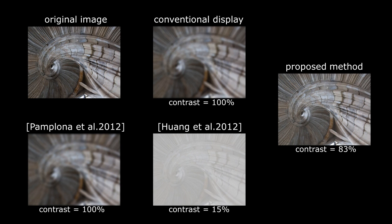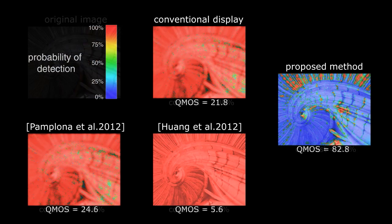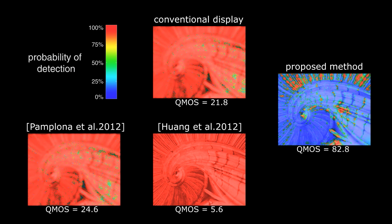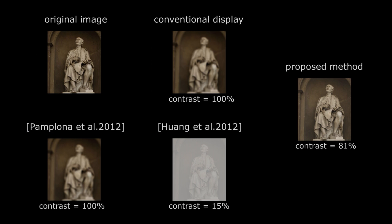In this second example, our result has 5 times the contrast and more than 3 times the score. And now, here is the final example.